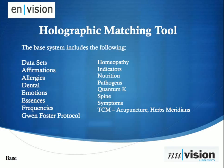The base system includes the following: affirmations, allergens, dental, emotions, essences, frequencies, Gwen Foster protocol, homeopathy, indicators, nutrition, pathogens, quantum case, spine, symptoms, and TCM which consists of acupuncture and herbs. This is a pretty comprehensive start. It's also expandable and customizable — if you work with your own line of essential essences or herbs, you can add those to the database. It's not a closed system at all.